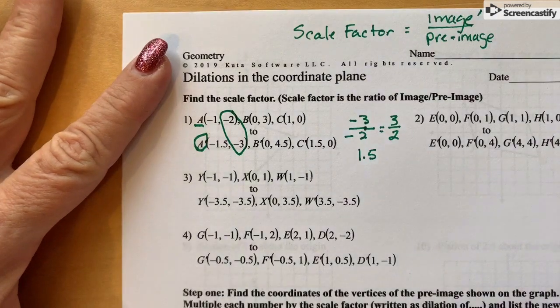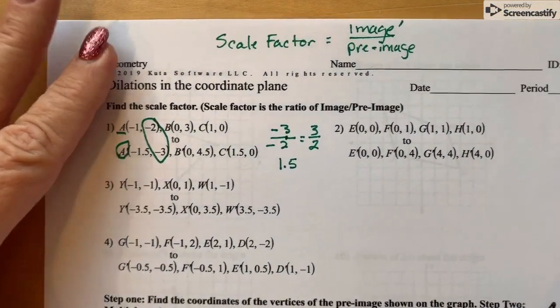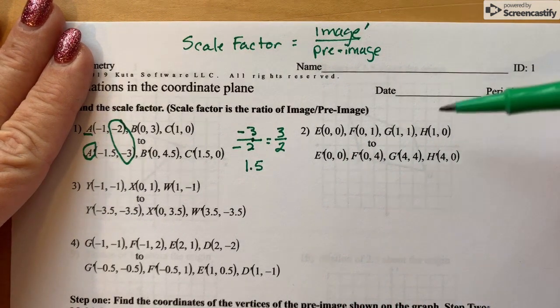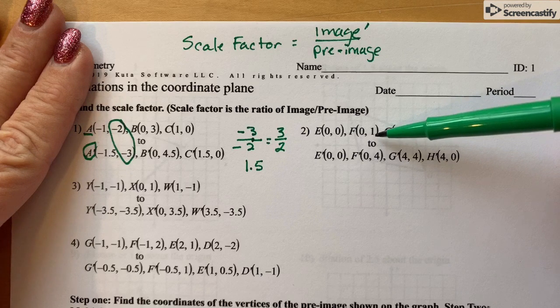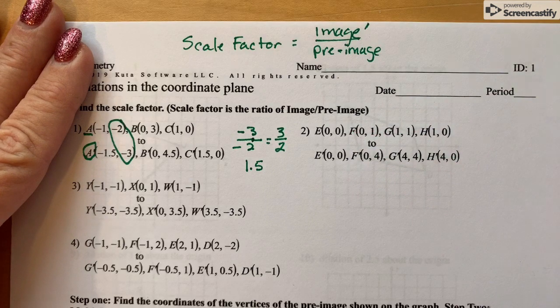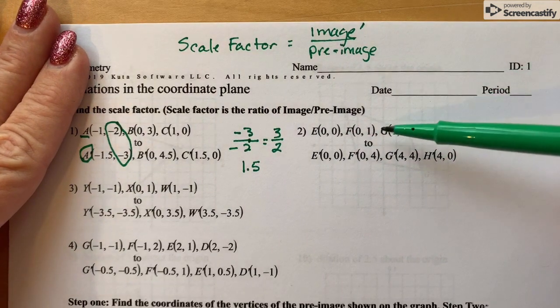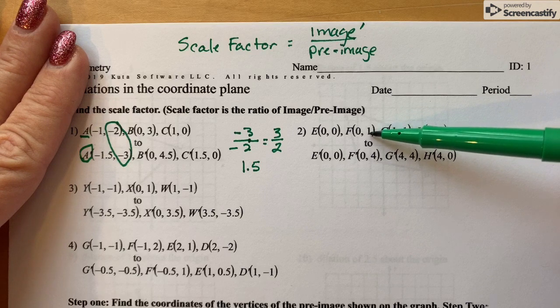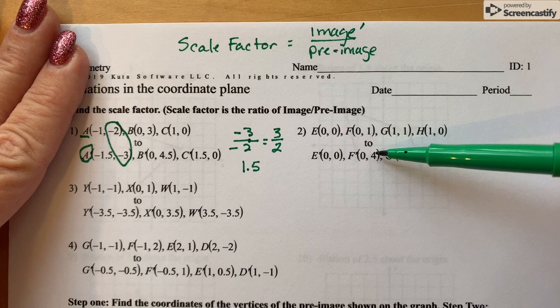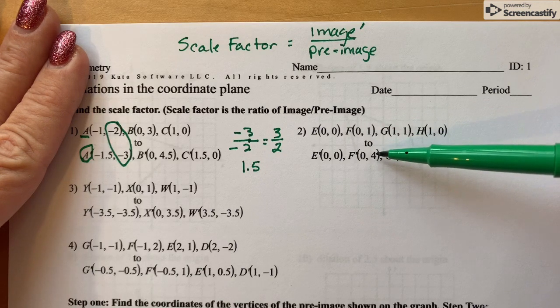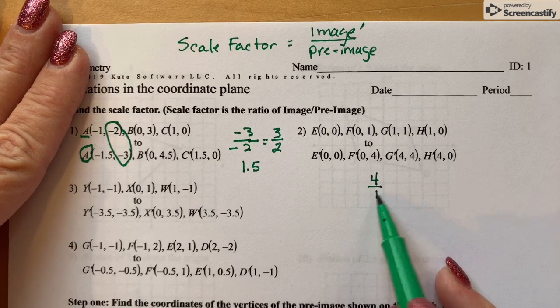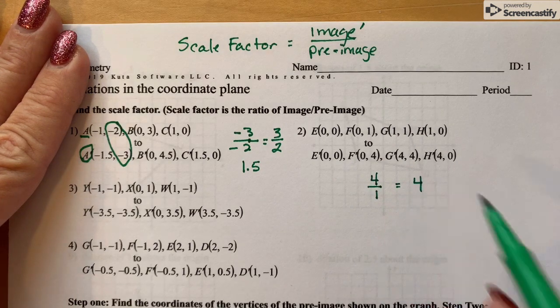So let me go ahead and go over one more with you. Number 2, you would need to pick one of these other numbers, not the zero zero because we don't have a scale factor of zero. Notice that in this one, the y values of point F and F prime go from 1 to 4. So which one is the image? It's the one with the prime, so it would be 4 over 1. So your scale factor is 4.